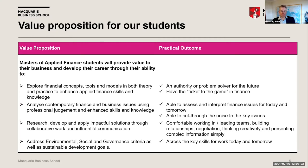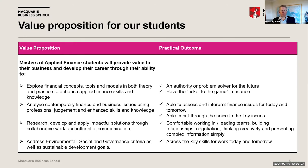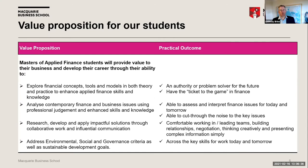The practical outcome is that through doing this course, we can help you get where you want to be. If you want to be the next Elizabeth Gaines or Rob Scott — CEOs of Fortescue and Wesfarmers respectively — this is a course that can help you get there. There are also people who have done this course in other jurisdictions and areas to make sure they are ready to finance their businesses. It's a wide-ranging application.